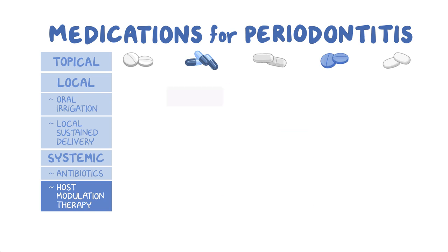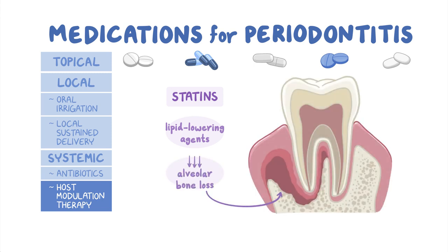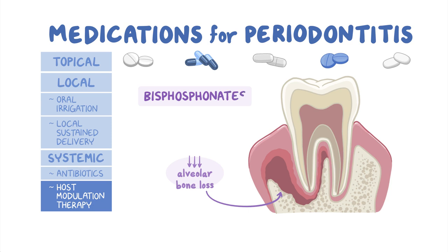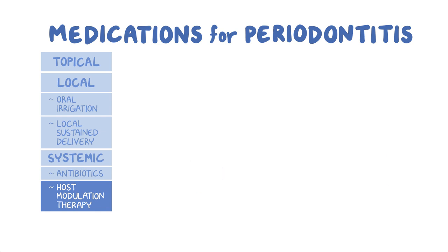Next, there are the statins, which are lipid-lowering agents that may inhibit alveolar bone loss. People taking these medications to lower their serum lipid levels might also benefit periodontally. Finally, we have bisphosphonates, such as alendronate. Some studies have shown that these medications may decrease alveolar bone loss, so people taking bisphosphonates for osteoporosis may also benefit periodontally. Most of the other candidate drugs for host modulation therapy are still in the experimental phase.